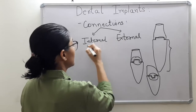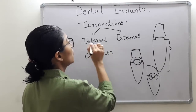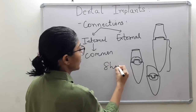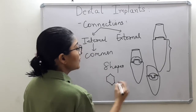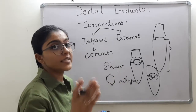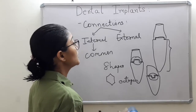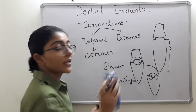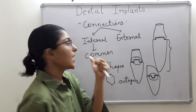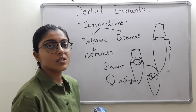We began with external connections but now all implant systems majorly have internal connection systems. These systems have various shapes and geometries — the most common is hexagon, we also have octagon and various other shapes. The reason for advancement is that screw loosening was a major issue with external connections, and internal connections offer better prosthetic features.